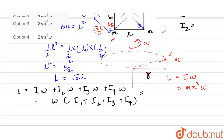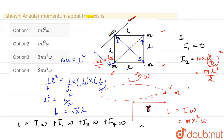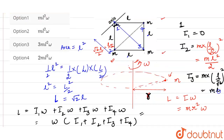For I2, the distance is L divided by root 2, so I2 equals M times (L/root 2) squared, which gives ML squared divided by 2. For I3, the perpendicular distance from the axis of rotation is the full diagonal length, root 2·L. So I3 equals M times (root 2·L) squared, which is 2ML squared. I4 equals I2, since their distances and masses are the same, giving ML squared divided by 2.